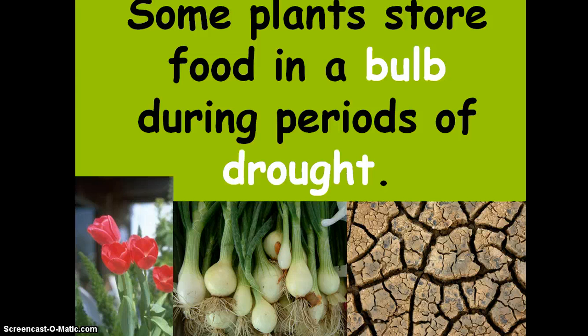Some plants store food in a bulb during periods of drought, so the bulb is a way to store food for times when the plant can't access water and can't make its own food. Plants might also have bulbs to help them survive the winter.